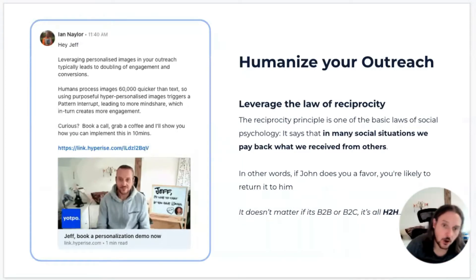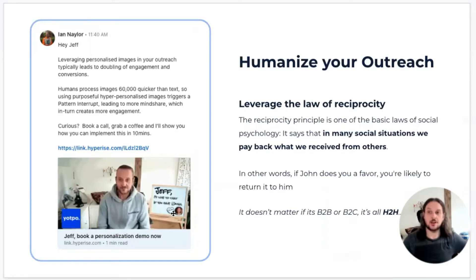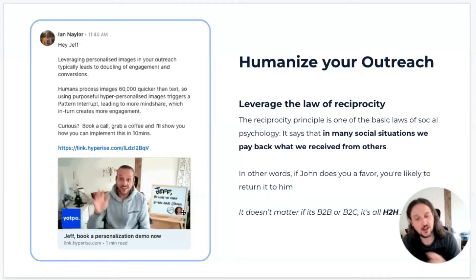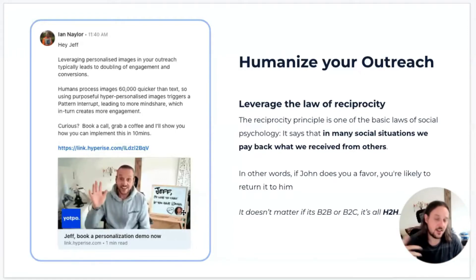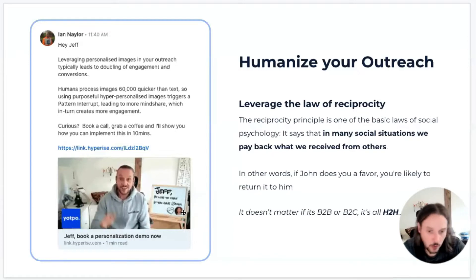Delving into more examples around humanised GIFs — within the image itself, what to have and how to present yourself. This is an example we use within Hyperise where we have a prop — in this case a whiteboard — next to me. We're putting through personalisation of the name, their logo, and their profile image, but also myself, front and centre, smiling and waving. That creates a kind of feel-good factor — delivering something people respond to very positively. That in turn helps you leverage the law of reciprocity, which basically says that if you do something nice for somebody, they're going to feel compelled to respond likewise. Creating that welcoming image and connection makes them more likely to respond.